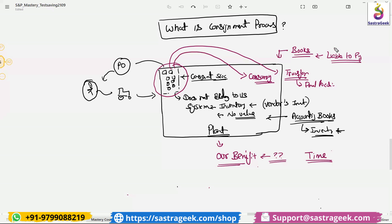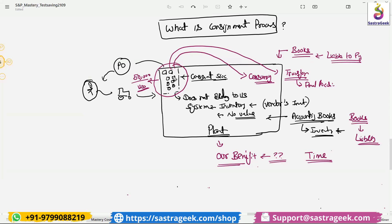Our benefit is we are not paying the vendor, so our cash flow is saved. We are getting this material in our premise but we are not paying the vendor — we only pay when we consume. In our books, our liability is not increasing. We are not liable to pay the vendor unless we consume. Maybe this is a stock worth 50,000 US dollars — that 50,000 is not our asset and not our liability; it is the vendor's liability.